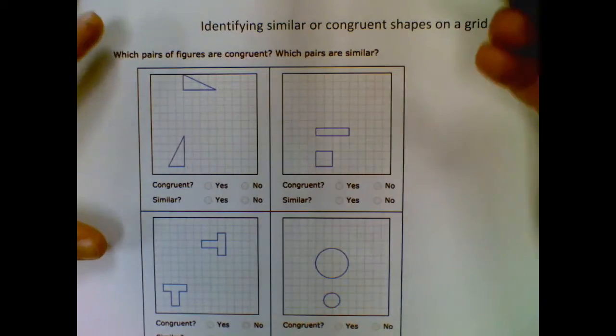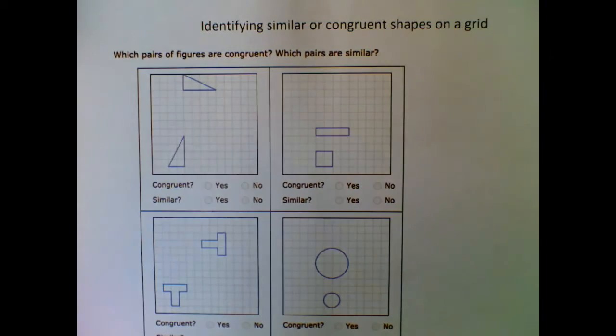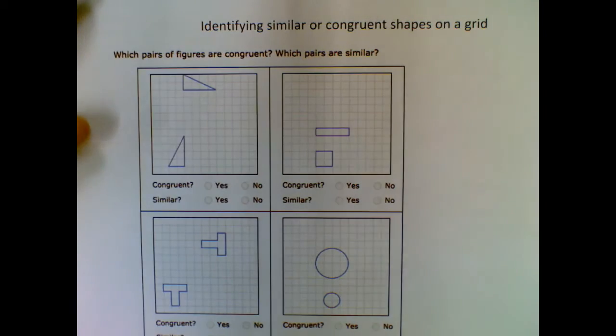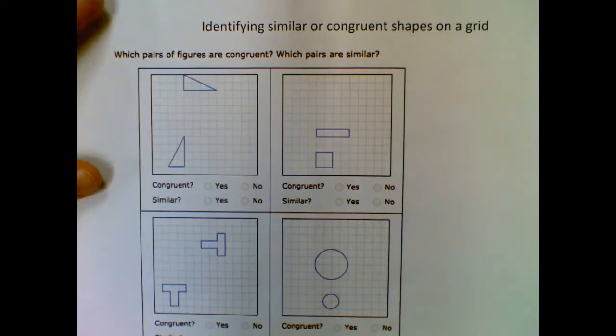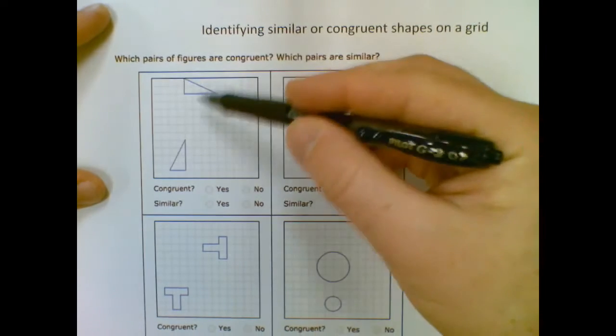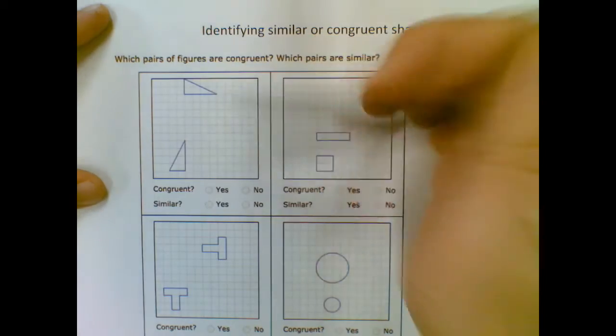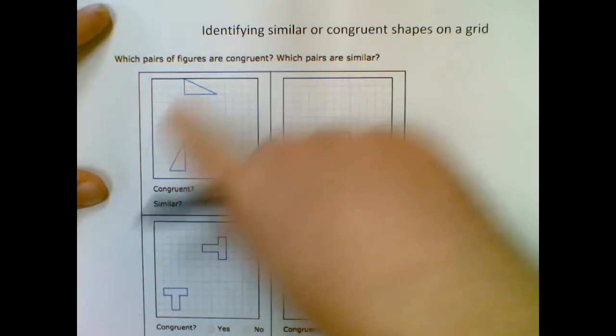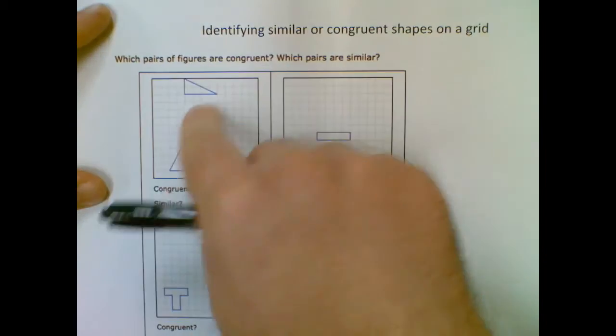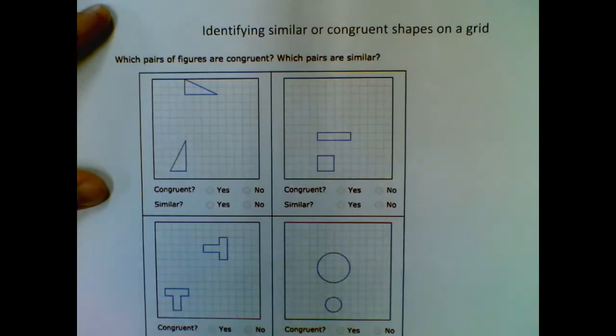So what we're looking for is if they're congruent, they're automatically similar, but they may not be the other way. They could be similar and not congruent. So the only difference is congruent, as we've talked about a little bit, if you saw the other topics. The congruent ones are going to match exactly. If I just shift and slide them around, imagine cutting out that shape and putting it right on top and they'll match exactly.